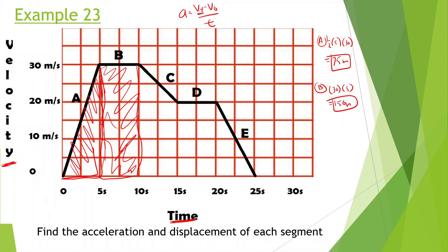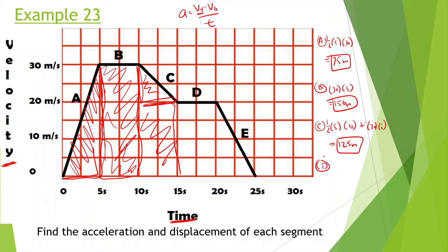For segment C, we have a rectangle at the bottom and a triangle on top: one half times base 5 times height 10, plus 20 times 5, giving 25 plus 100 equals 125 meters. For D, it's a rectangle: 20 times 5 equals 100 meters. For segment E, a triangle: one half times base 5 times height 20 equals 50 meters.